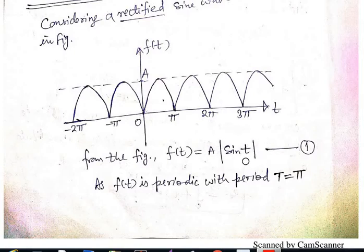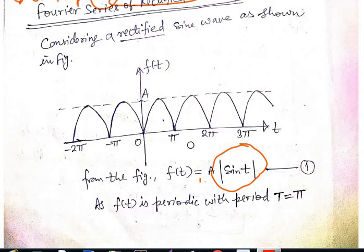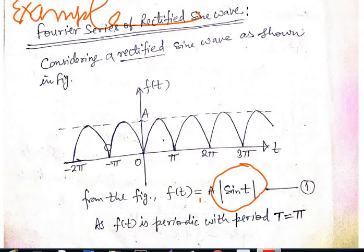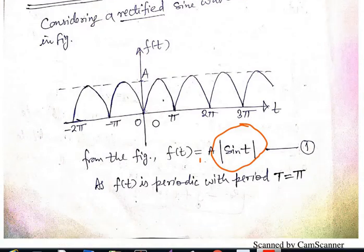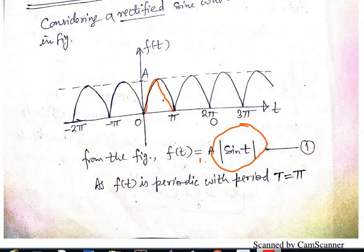f(t) is periodic, with each term periodic with period π. The signal from 0 to π is simply copy-pasted: 0 to π, π to 2π, 2π to 3π — so the fundamental period is T = π.